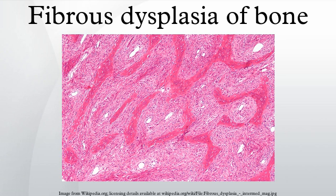There are two types of fibrous dysplasia: monostotic and polyostotic. The most severe form of polyostotic fibrous dysplasia is known as McCune-Albright syndrome. Fibrous dysplasia of bone may also be an associated abnormality in neurofibromatosis type 2.